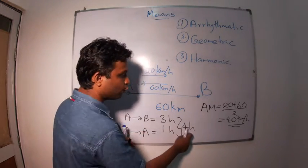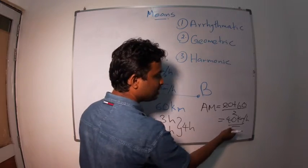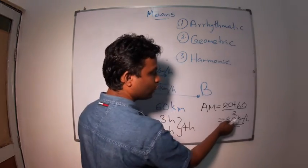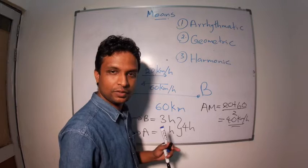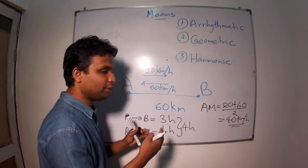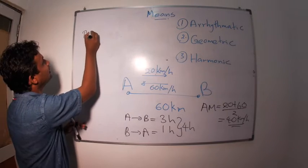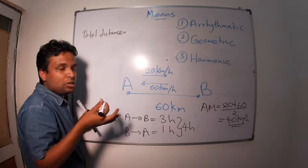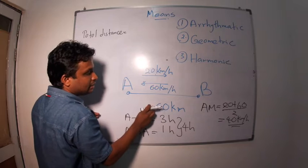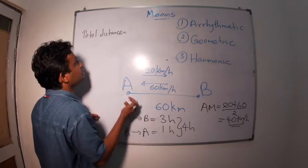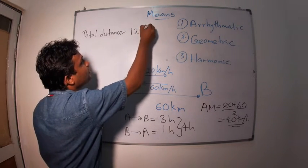Now, look at four hours with the average speed of 40 kilometers per hour. What is the total distance with regards to the average speed? Total distance, the actual total distance is 60 and 60, 60 plus 60, 120 kilometers.